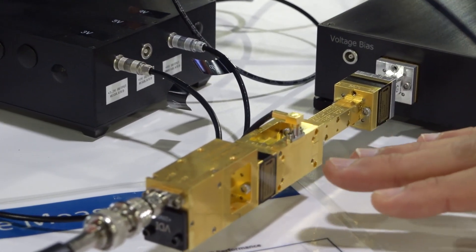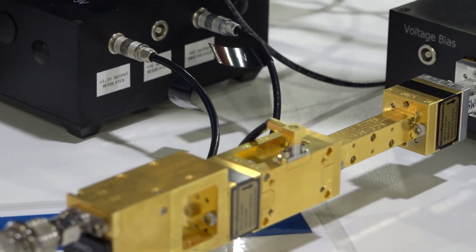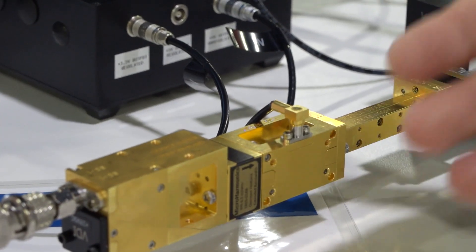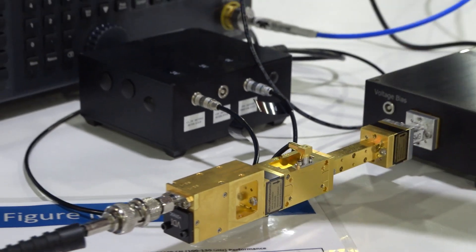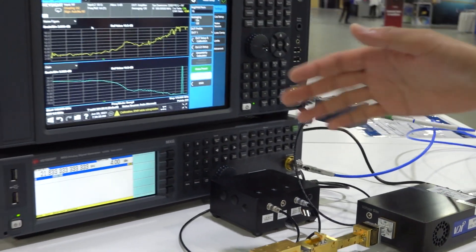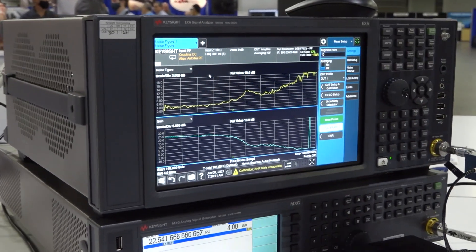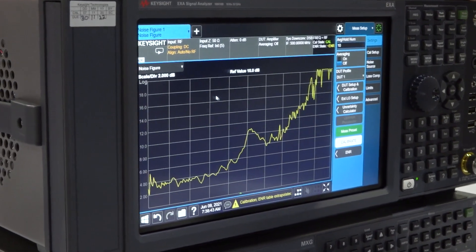You can see after you do the calibration, you place the device under test in between the noise source and the down converter. You get a gain measurement and also a noise figure measurement.